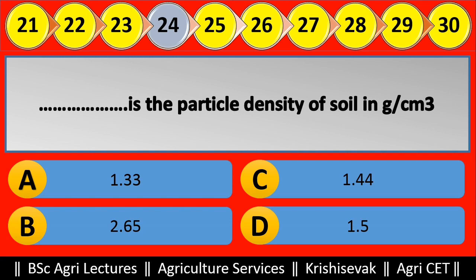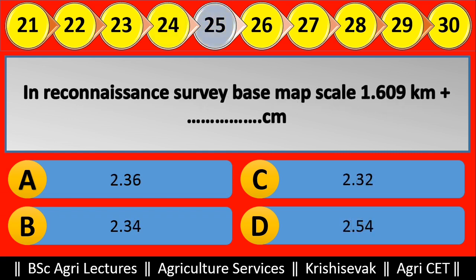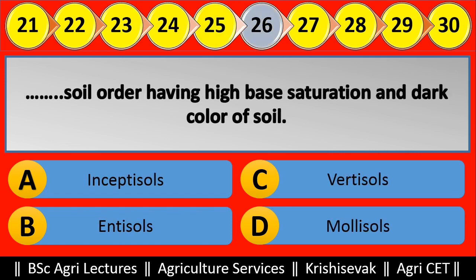Question 25: In reconnaissance survey, base map scale 1.609 kilometer equals blank centimeters. Options are: (a) 2.36, (b) 2.34, (c) 2.32, (d) 2.54. Right answer is 2.54, option D.